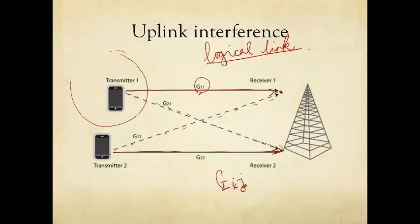For example, G11 is the channel from the transmitter of logical pair one to the receiver of logical pair one. Well, that's a good channel. Indeed, it is the direct channel for desired communication. And so is G22. So in general, Gii are the direct channels.